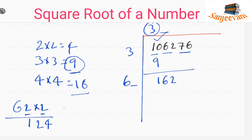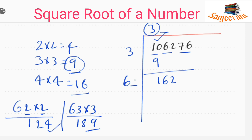We check 63×3: 3×3=9, 6×3=18, giving 189 — that is more than 162. So we choose 2. We write 2 here; 62×2=124. Subtracting 124 from 162 gives us a remainder of 38.